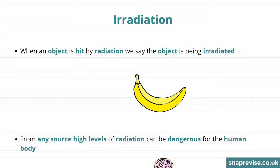So what is irradiation? Well, when an object is being hit by radiation we say that the object is being irradiated. So here is some radiation hitting an object, and as a result the object is being irradiated.